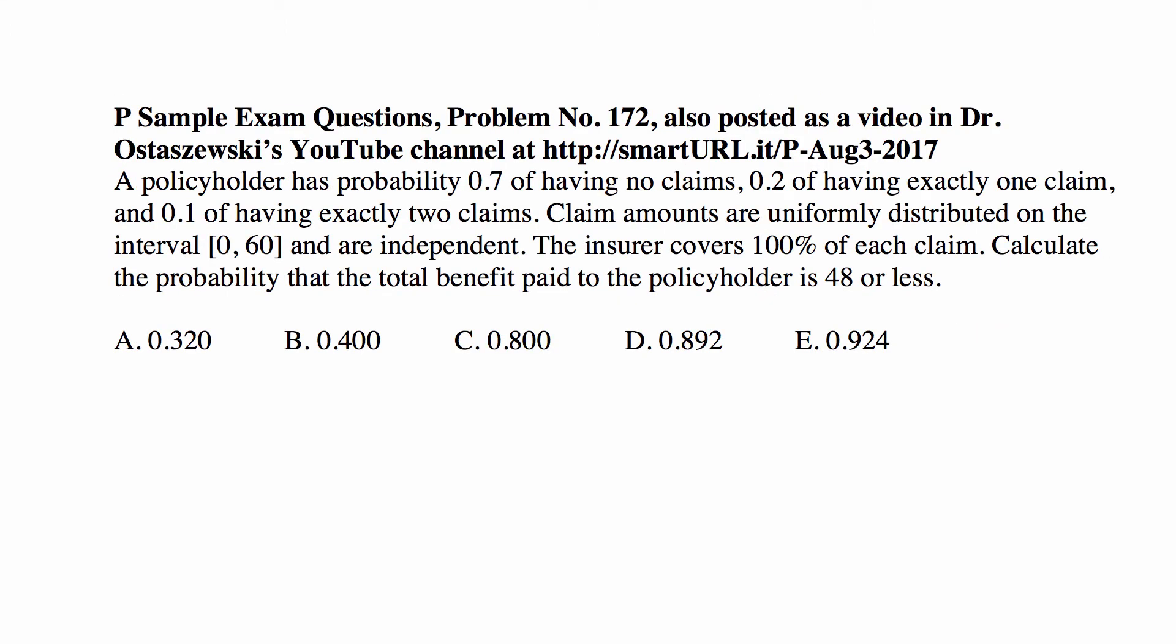Here is the story of the problem for today. A policyholder has probability 0.7 of having no claims, 0.2 of having exactly one claim, and 0.1 of having exactly two claims. Notice that these probabilities add up to one, so that's all. There are no other possibilities. Claim amounts are uniformly distributed on the interval 0 to 60 and are independent. The insurer covers 100% of each claim. Calculate the probability that the total benefit paid to the policyholder is 48 or less.